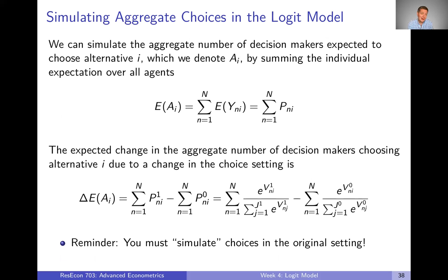Usually we don't care about how any one individual changes their choice — oftentimes what we care more about is how aggregate choices are changing. How is the total number of people making choice one versus choice two changing? If we call that capital A for aggregate choices, then our expectation about A — we can just take the expectation for every individual in our dataset and add those up.